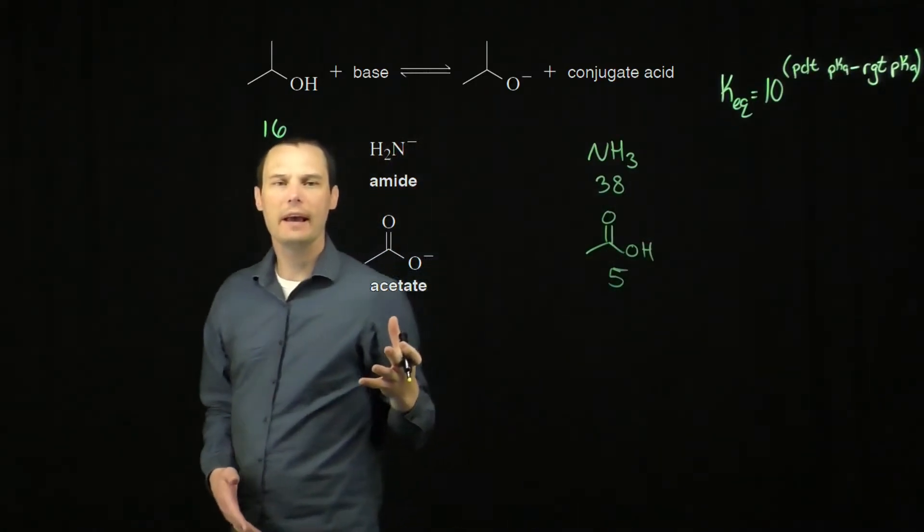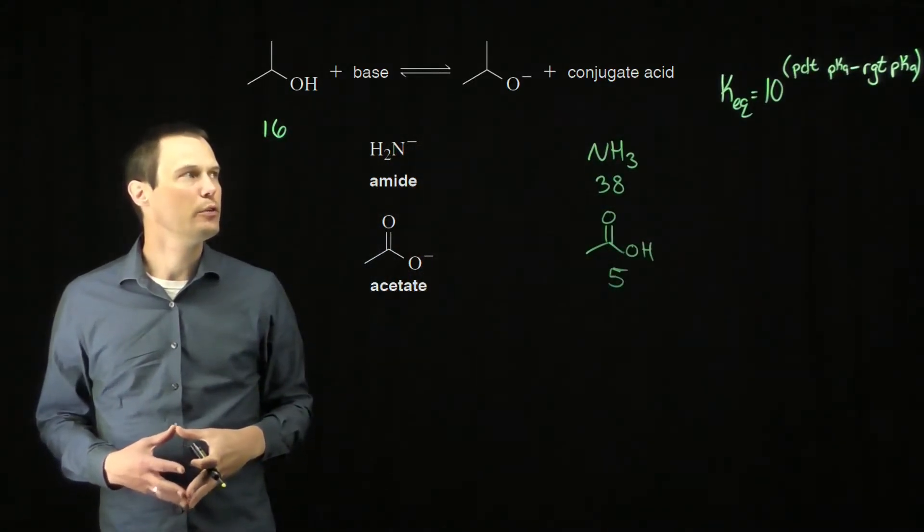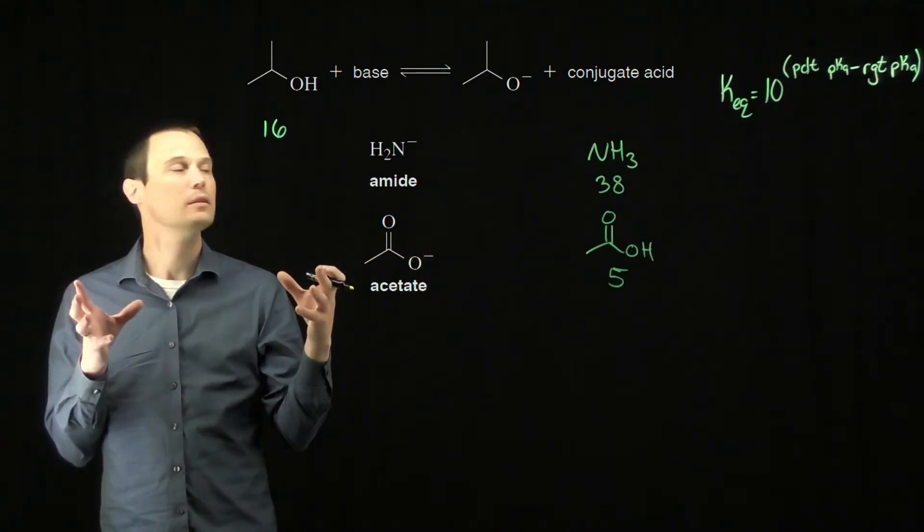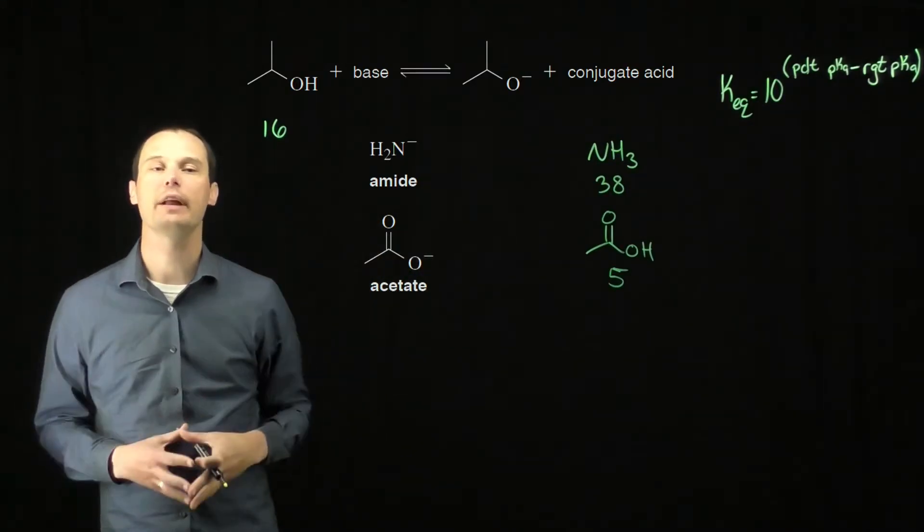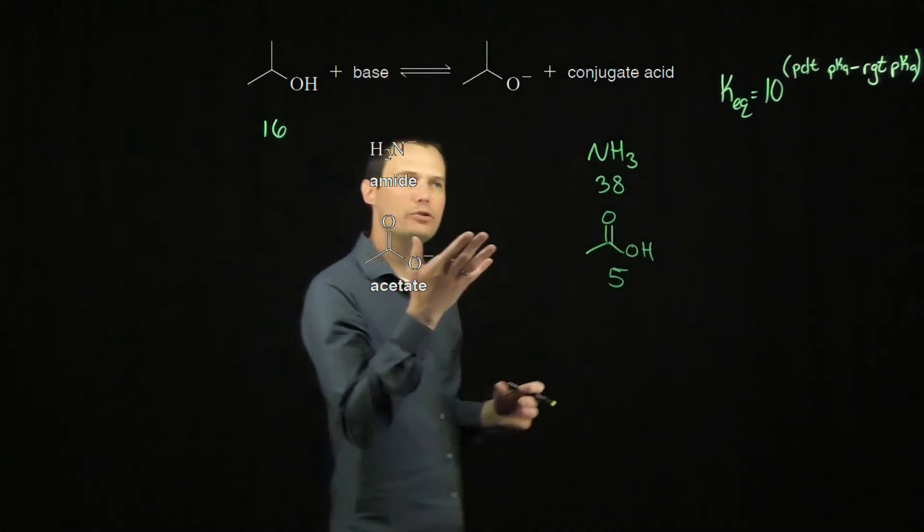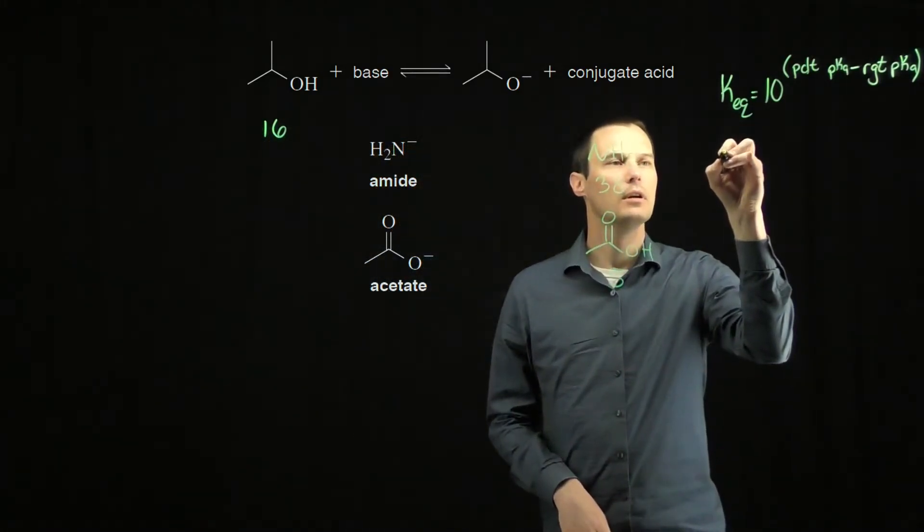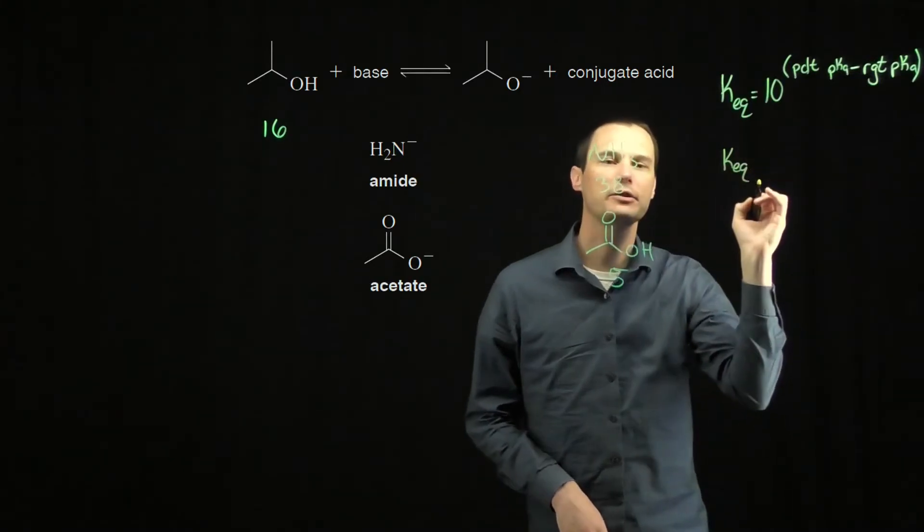Using these pKa values, we can plug them into our Keq formula. The Keq formula is 10 to the product acid pKa minus the reagent acid pKa. So we'll start with this first equation, this first acid base reaction.